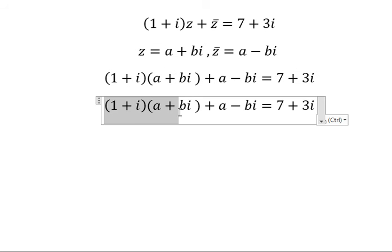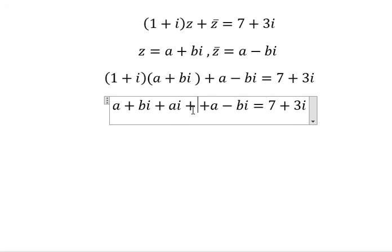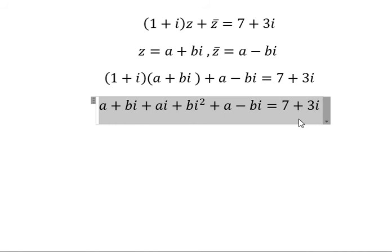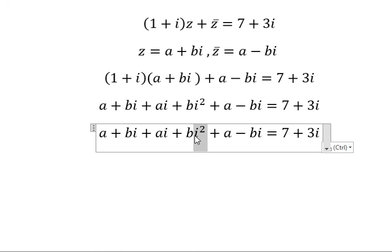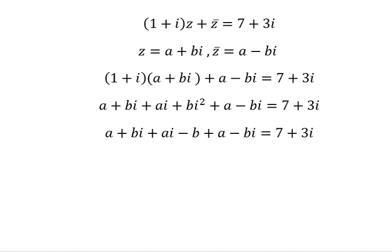Now we need to expand this. We have a plus bi plus ai plus bi squared. We know that i squared represents negative one, so we have negative b.